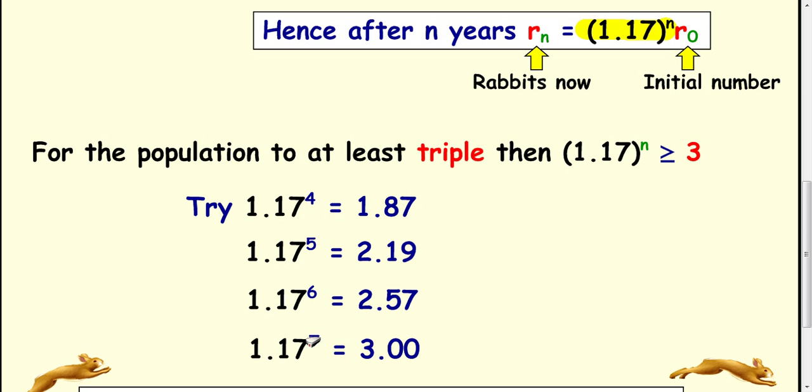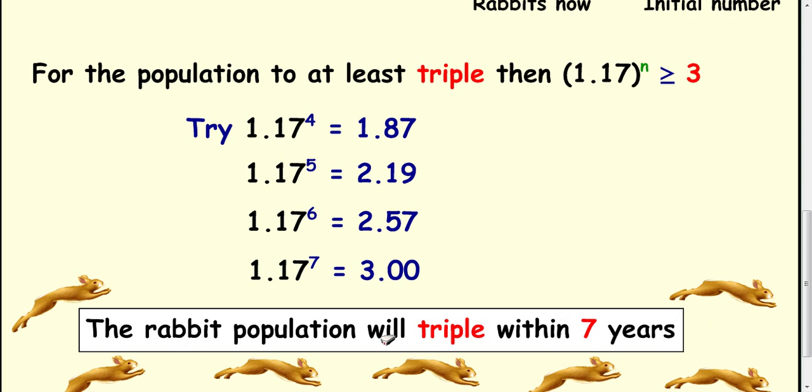We have a winner then. So 1.17 to the power of 7 gives us 3 times the initial number of rabbits. So we're talking about 7 years. The rabbit population will triple within 7 years.